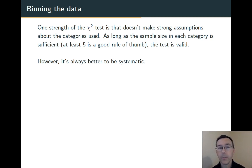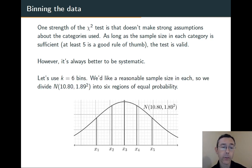The main thing is that we need to have reasonable sample sizes in each one. However, it's always better to be systematic. We don't want to inadvertently introduce bias into our study in the selection of our categories. So let's use six bins with a sample size of 48. Six will assure us that we have an expected sample size of 8 in each bin.